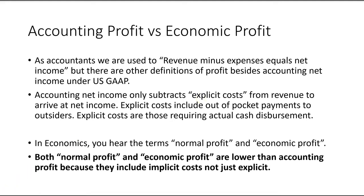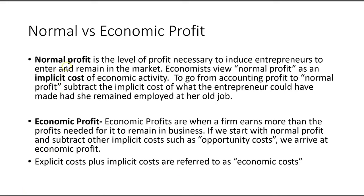In economics there are two other terms for profit: normal profit and economic profit. Both normal profit and economic profit will always be lower than accounting profit, because they include implicit costs — not just explicit costs. Accounting net income only subtracts explicit costs, but normal profit and economic profit also include implicit costs.